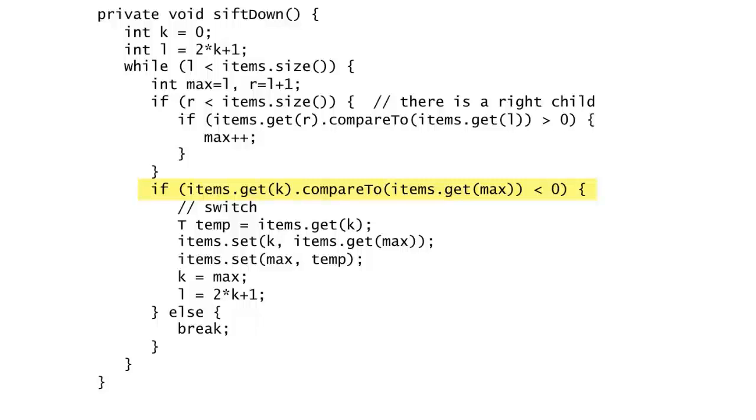The next if statement compares the k item against the max item, and if the former is less, a switch takes place. Following this, k is set to max, and l is recomputed in preparation for the next iteration. On the other hand, if the k item is not less than the max item, sift down should stop, which is implemented by breaking out of the while loop. Okay, I think we're all set to finish up the implementation. Let's move on to the heap class.